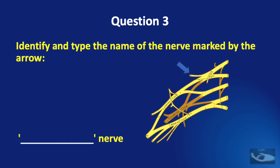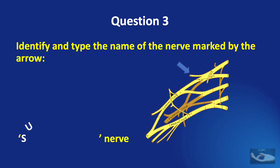Question number three: identify and type the name of the nerve marked by the arrow, dash nerve. And the answer is suprascapular nerve.